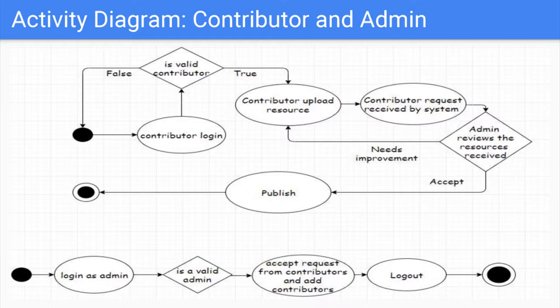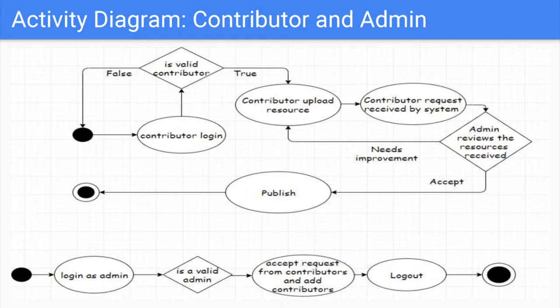This is the activity diagram. The contributor needs to log in with a registered account validated by the administrator. Once logged in, he can submit contributions. If a resource is approved by the administrator, it is published; otherwise the administrator tells the contributor that improvement is required. The admin's activity diagram works similarly — he logs in, the system verifies his role, and he can also contribute, review contributions, and verify that resources are authentic.